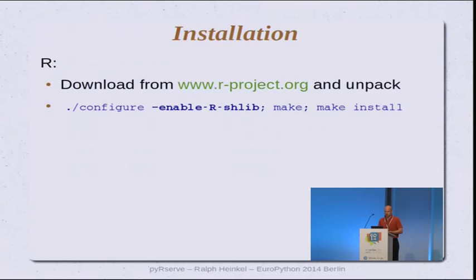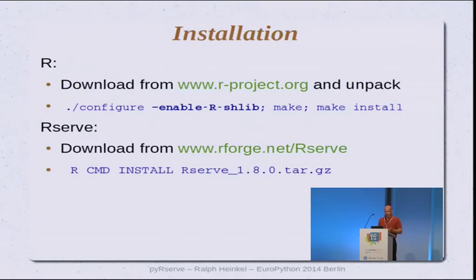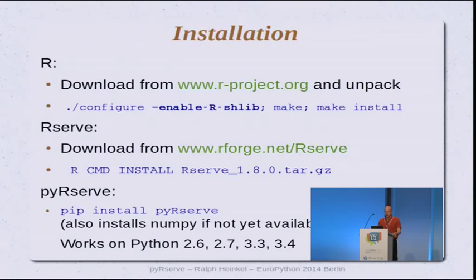Installation is quite easy. You download R from the source server. It's not possible to use pre-compiled packages because for running R-Serve you need to compile and link R with a special flag: --enable-R-shlib. Otherwise R-Serve cannot be loaded into the execution space of R. R-Serve can be directly compiled by R using the R CMD INSTALL command. And the missing piece on the Python side is just a Python package downloadable from PyPI, running on Python 2.6 through 3.4, and it needs NumPy.